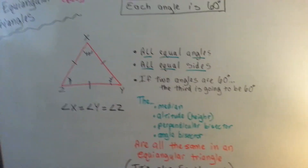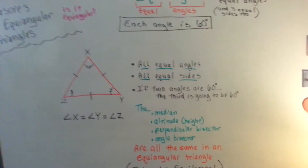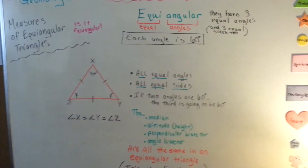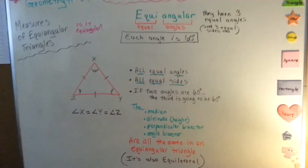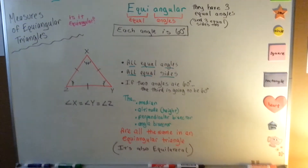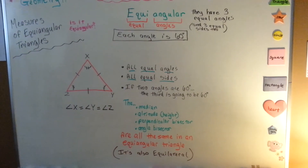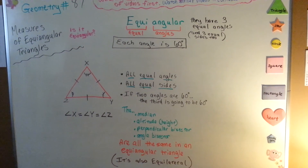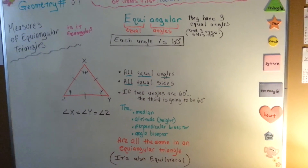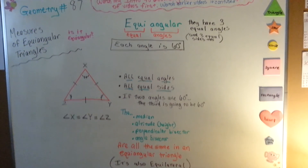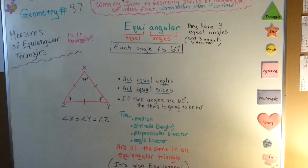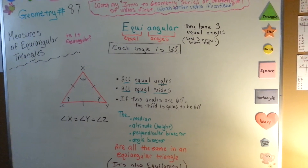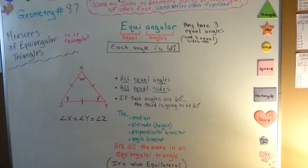So equiangular — that's an easy one. I'll see you in the next video, number 88. We're going to discuss the measures of a right triangle. And after that, we've got a proof coming up. Go ahead and take a look.